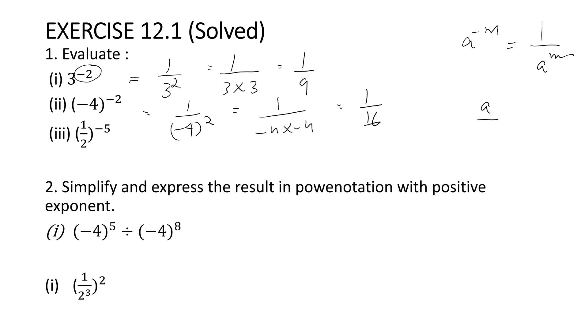Now, 1 by 2 raised to minus 5 — we can write it using the law: a by b raised to minus m can be made positive by taking the reciprocal, writing it as b by a raised to m. Similarly, (1 by 2) whole raised to minus 5 can be written as (2 by 1) whole raised to 5. 2 raised to 5 is 32, and 1 raised to 5 is 1, so the answer is 32.